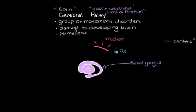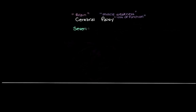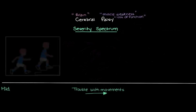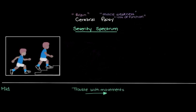One interesting issue with cerebral palsy is that the amount of trouble each person has with their movements can vary a lot. Let's draw a severity spectrum — the further to the right, the more trouble the person has with movements. On the mild end, we have people who aren't too badly affected from a functional day-to-day point of view. This little boy here looks like he's able to walk and run around pretty well. He'll still have some movement problems — maybe he can't run quite as fast, or he has some trouble with coordination like running and throwing a ball at the same time — but overall he functions pretty well on a day-to-day basis.